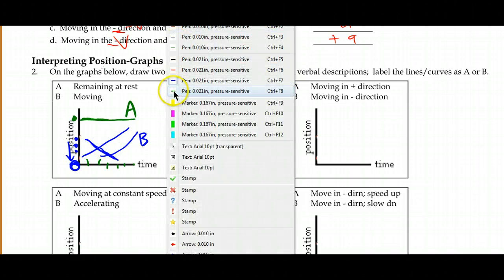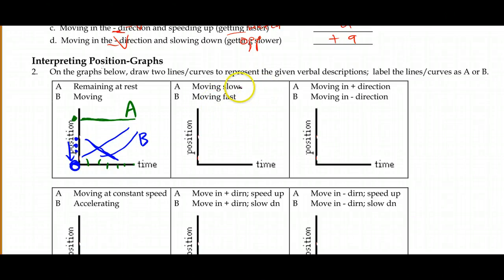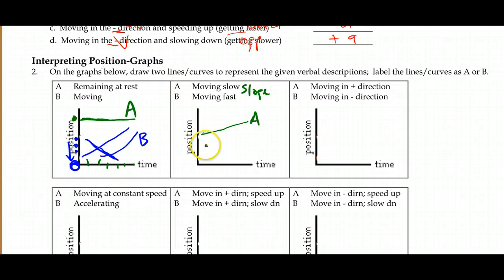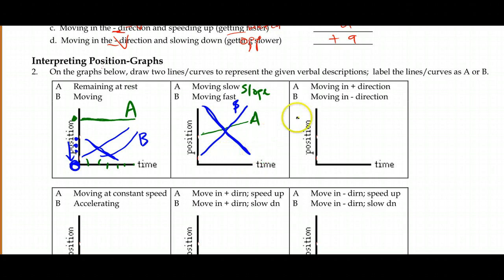Moving slow versus moving fast is all about the slope — specifically its steepness. Moving slow means the slope is not very steep. Moving fast means the slope is steep — it could be steeply upward or steeply downward. As a rough guide, steeper than 45 degrees might be considered fast and shallower than 45 degrees slow, though the actual values on the graph determine this.